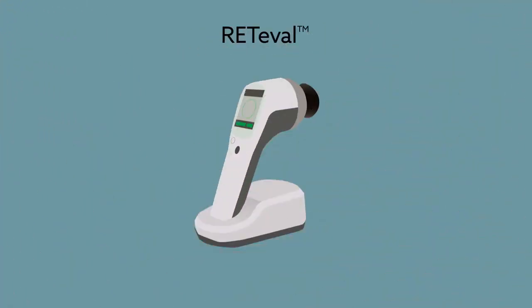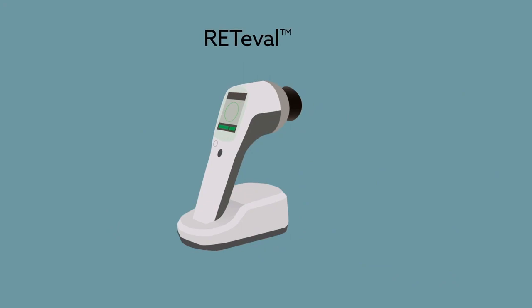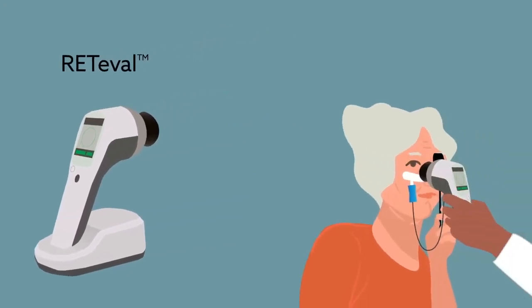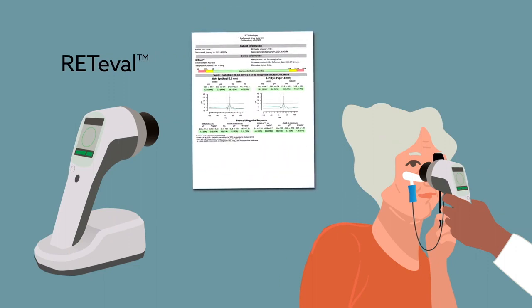But with the RETeval system, ERG has significantly improved. The RETeval handheld device uses skin electrodes, needs no dilation, and provides color-coded test results to comfortably evaluate ERG results.